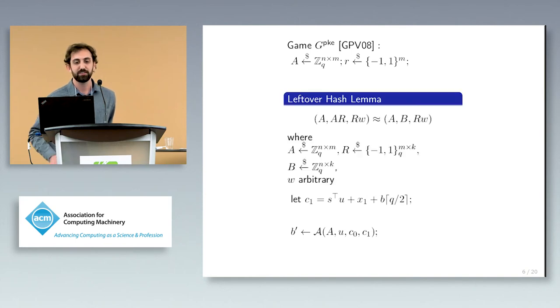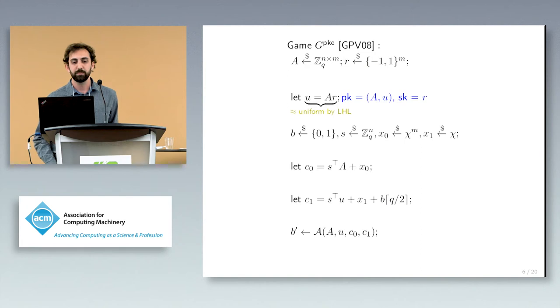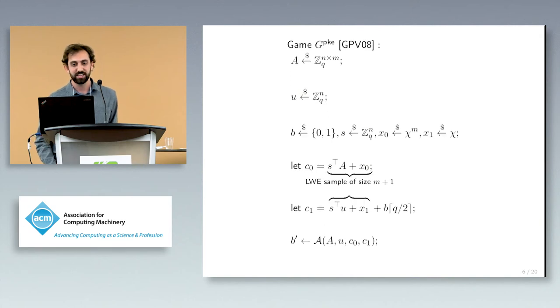So the first step of the proof is to erase the hidden correlation between A and U, which we can do so using something called the leftover hash lemma, which says that multiplying a random matrix A by a random bit matrix R results in another random matrix close to uniform and independent from A. This result is also robust to a linear leakage of this bit matrix R by the vector W. Thus, we can apply the leftover hash lemma to this vector U to change to a hybrid game where U is sampled uniformly.